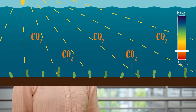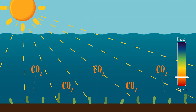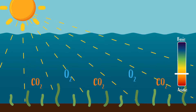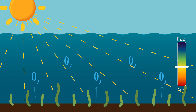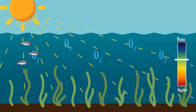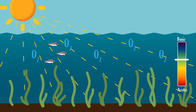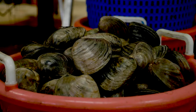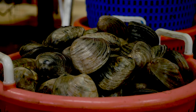SAV and seagrasses can actually improve conditions locally that are detrimental under ocean acidification. When they're photosynthesizing, they're taking carbon dioxide out of the water. That's basically the opposite of ocean acidification, which is an increase in the amount of carbon dioxide in the water. The pH then also increases, which makes it easier for organisms like clams and oysters to build their shells.